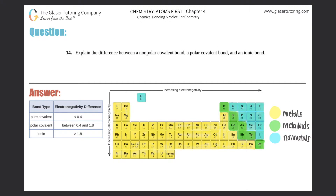Number 14: explain the difference between a non-polar covalent bond, a polar covalent bond, and an ionic bond. For all three of these, they're talking about a certain bond, so we're not talking about the overall compound or molecule — we're just talking about the individual bond between two atoms.